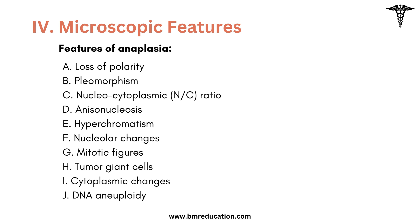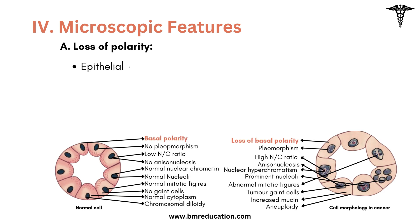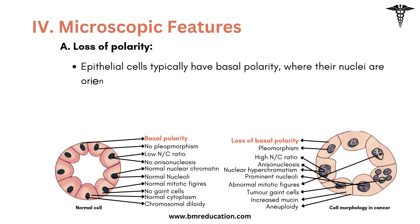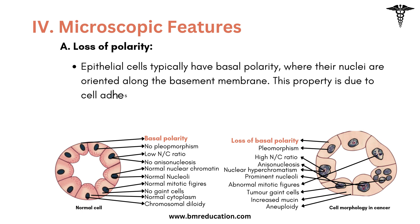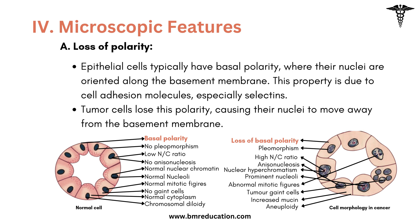We will now discuss each feature of anaplasia. The first feature is loss of polarity. Epithelial cells typically have basal polarity where their nuclei are oriented along the basement membrane. This property is due to cell adhesion molecules, especially selectins. Tumor cells lose this polarity, causing their nuclei to move away from the basement membrane.